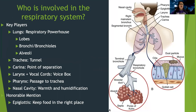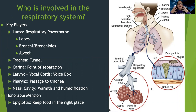The respiratory system has multiple parts. We can start with the upper airway — we have our nose and our mouth where air goes in. We have the pharynx, which is the passageway. It's a lot of passageways and tubes that get us down to that area where gas exchange actually happens.